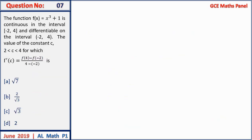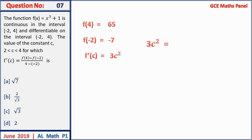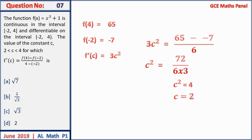Question 7: the function f(x) is continuous and differentiable on the interval. We find c such that f′(c) = [f(4) − f(−2)] / [4 − (−2)]. Computing: f(4) = 65, f(−2) = −7, and f′(x) = 3c². So 3c² = (65 − (−7))/6, giving c² = 4 and c = 2. The answer is D.